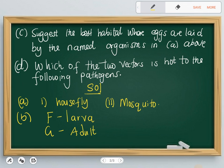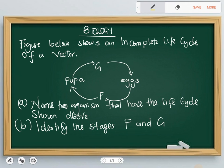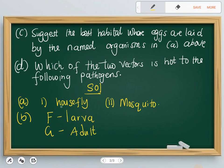We move on. Part C: Suggest the best habitat where eggs are laid by the named organisms in A above. So the question was name organisms, and we said the housefly and mosquito. Then they are saying the habitat is the place where a housefly lays its eggs and where a mosquito lays its eggs. That's what they want us to answer.